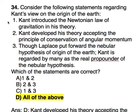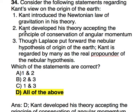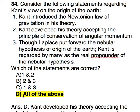This statement is correct. Kant introduced the Newtonian law of gravitation in his theory — that is a correct statement for Kant's origin of earth theory. The second statement is also correct: Kant developed his theory accepting the principle of conservation of angular momentum. The third statement — Laplace put forward the nebular hypothesis — is also correct, as Kant is regarded by many as the real propounder of the nebular hypothesis. All three statements are correct, so the answer is 'all of the above.'